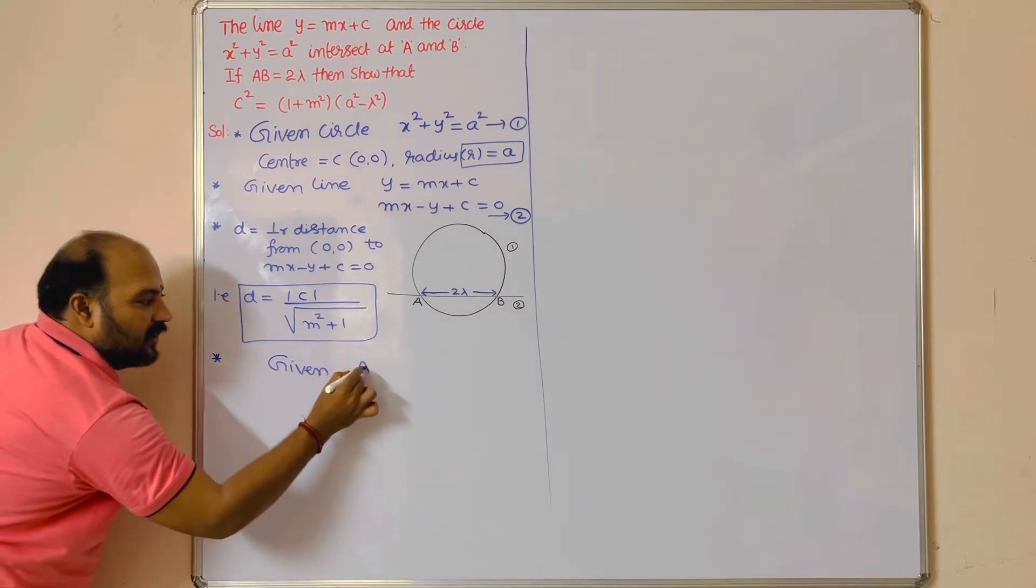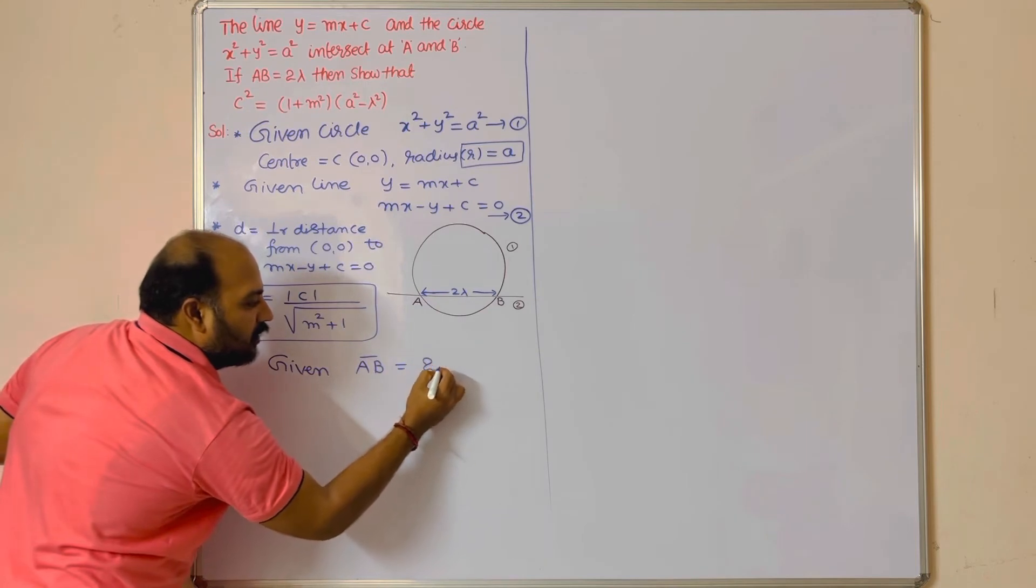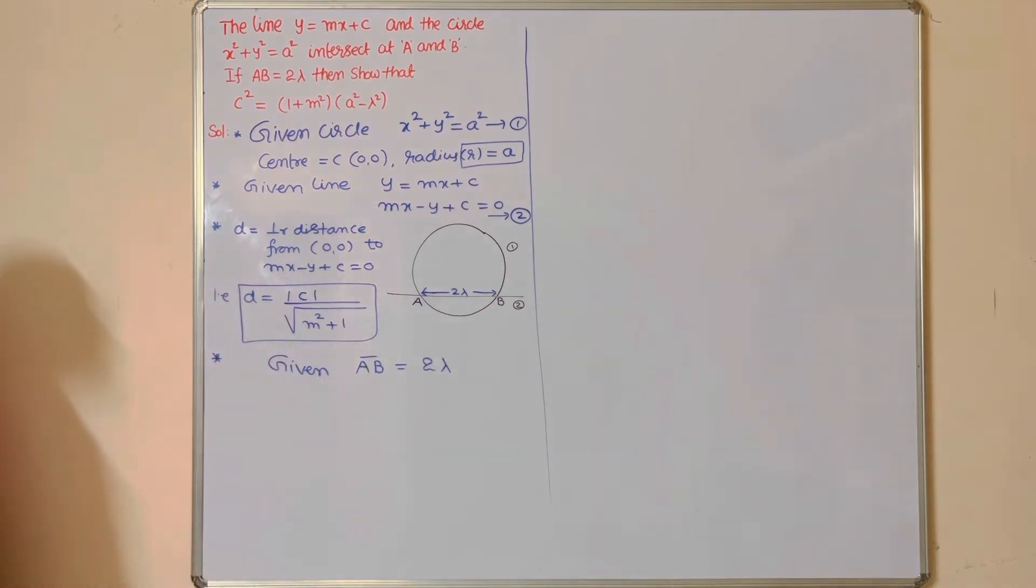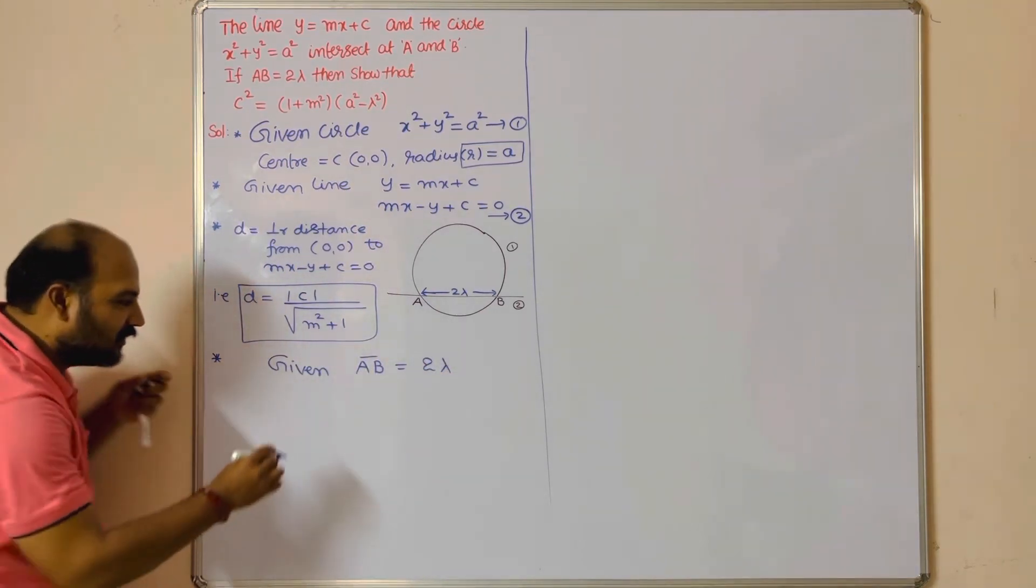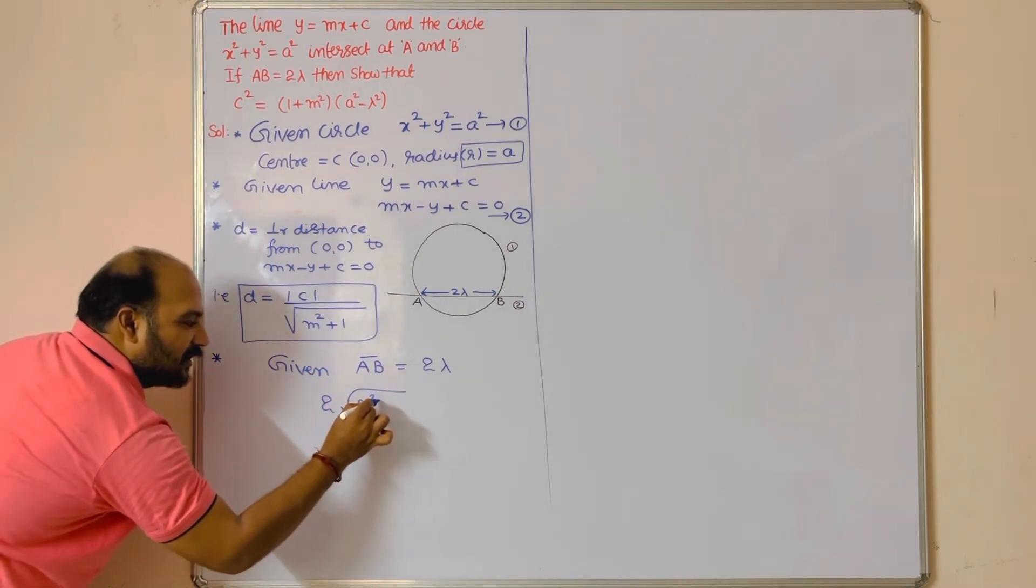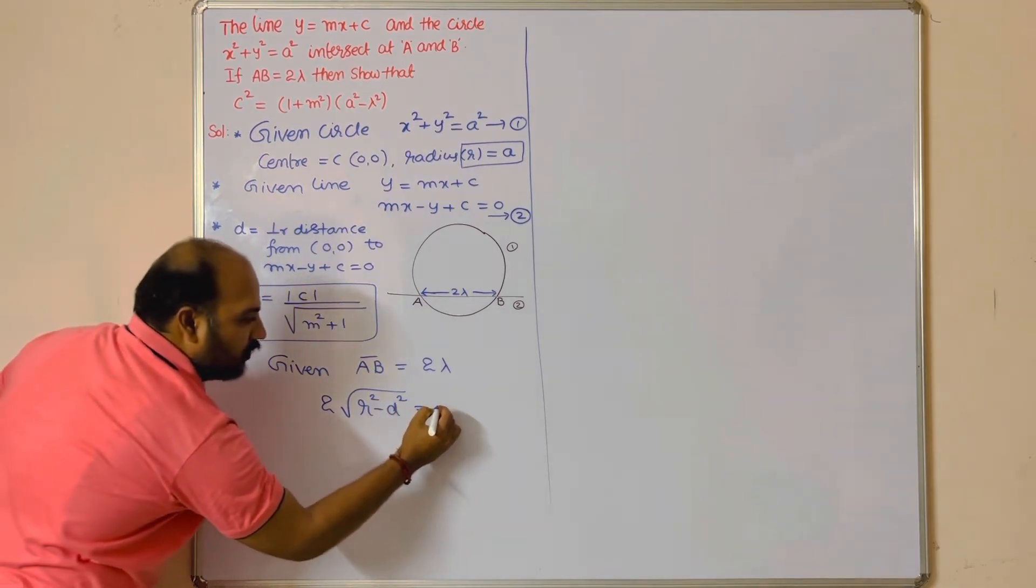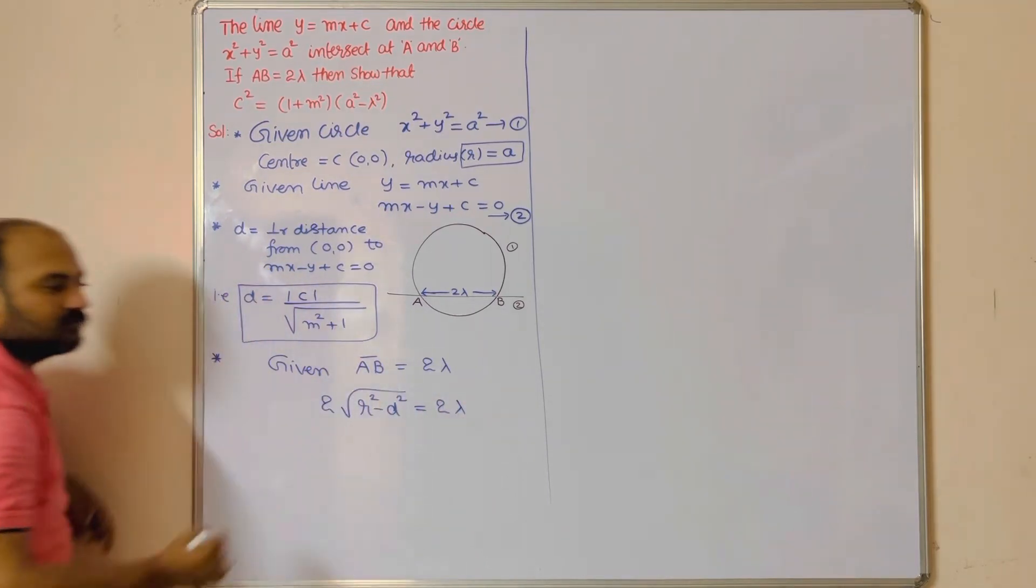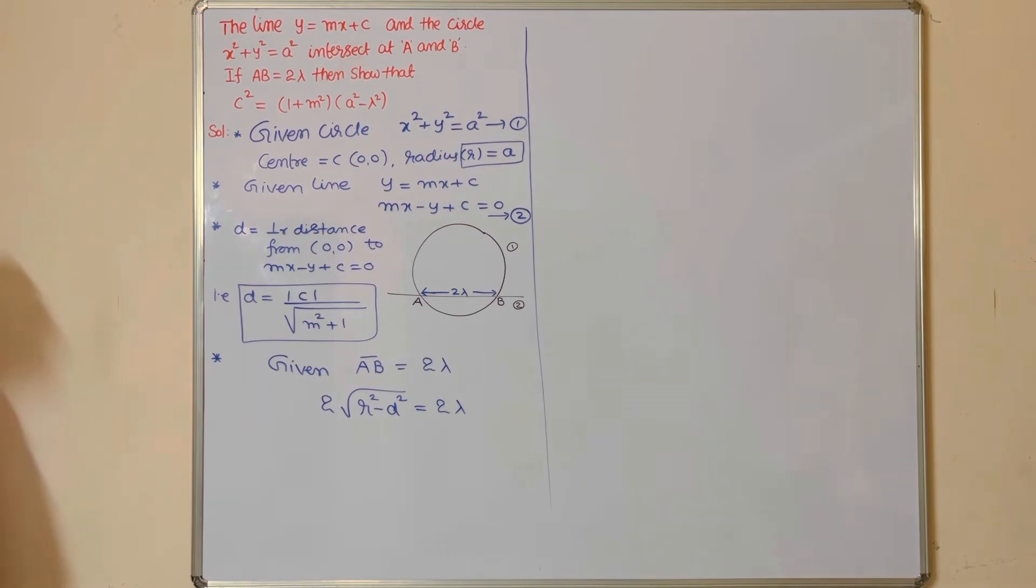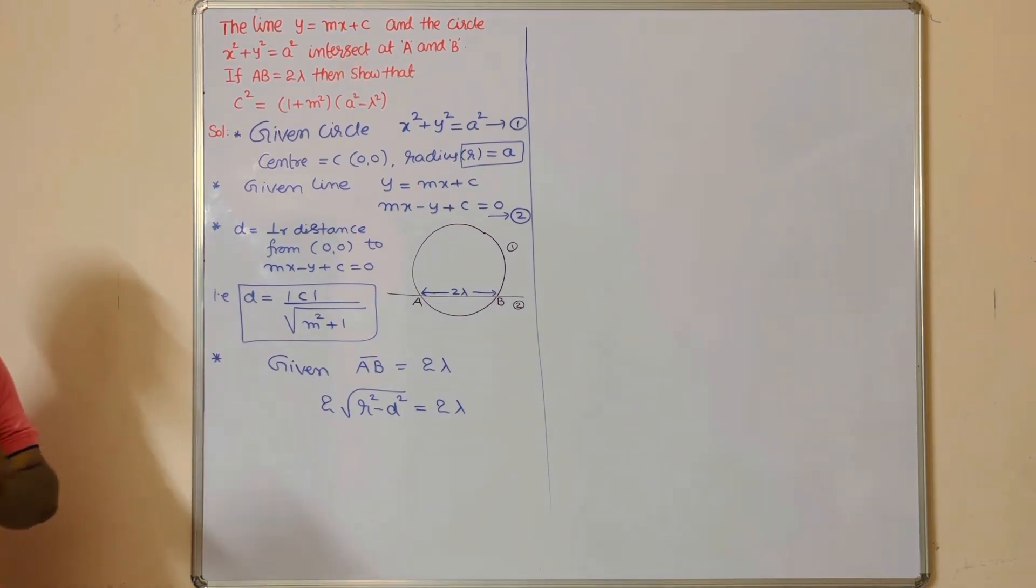Given AB = 2λ. What is AB? 2√(r² - d²)—length of chord = 2λ. Till this step, you will get 2 marks if they are asking for 4 marks.